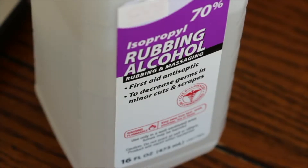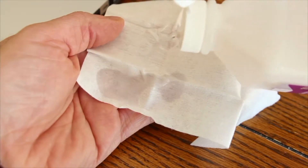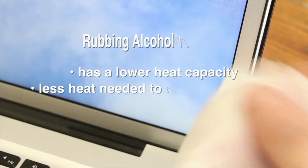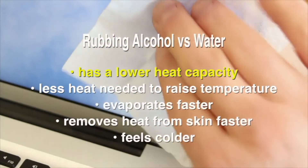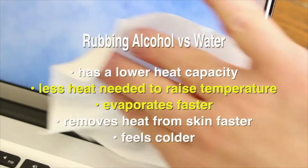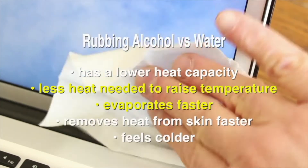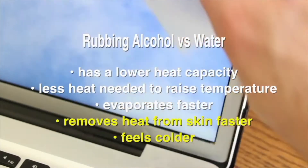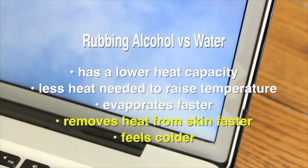For example, if you have used rubbing alcohol to clean your computer screen, you will notice that it feels cold, even though the liquid is at room temperature. If you get a drop of rubbing alcohol on your skin, it feels colder compared to a drop of water. This is because rubbing alcohol has a lower heat capacity than water, so less heat is needed to raise its temperature and thereby evaporate the liquid. The faster evaporation removes heat from your skin faster, so it feels colder.